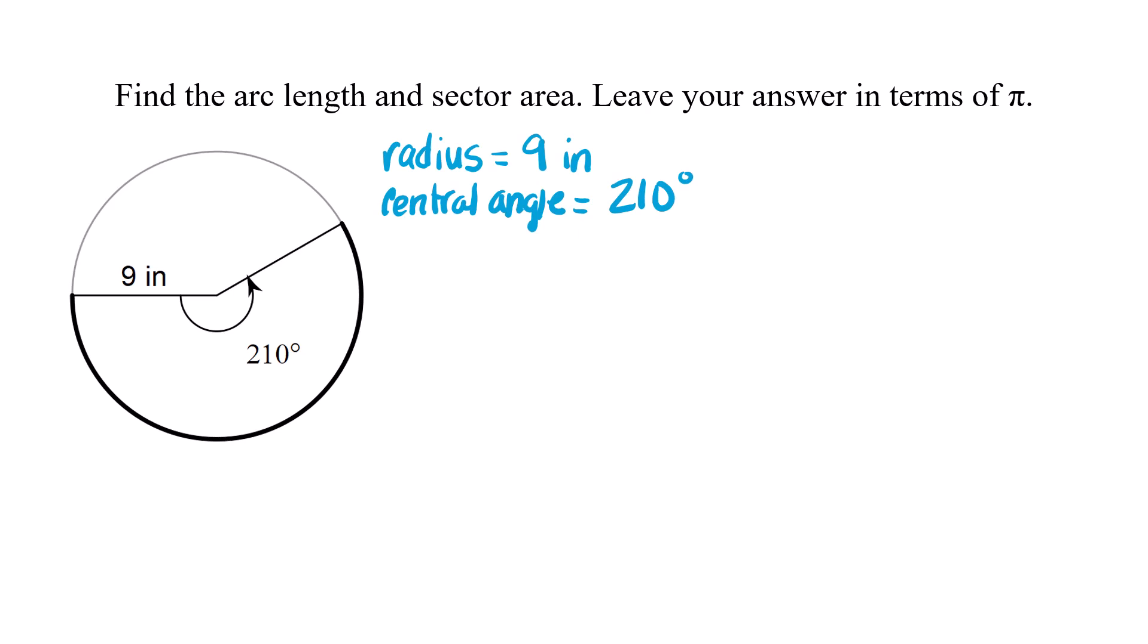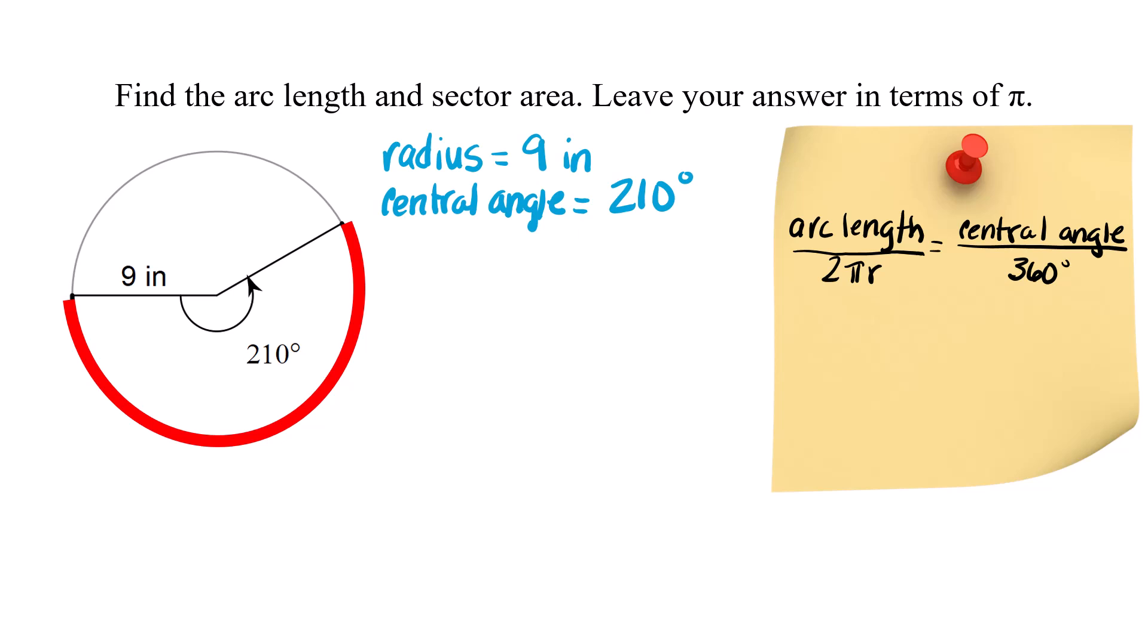If you want to find arc length, arc length is this segment that's kind of bent around the circle. It's just this length. It's an arc. How long is that? So to find it you use a proportion. There are formulas for this too but they're based on the proportion so I just like to use the proportion.